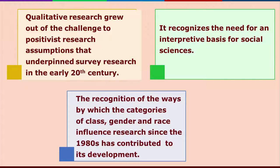The growth of the quantitative method goes back to 19th century knowledge systems when there was an assumption based on the Cartesian model that knowledge grows out of rationality. By the 19th century, the Cartesian framework of 'I think therefore I am' tended to be interpreted in an empirical sense.